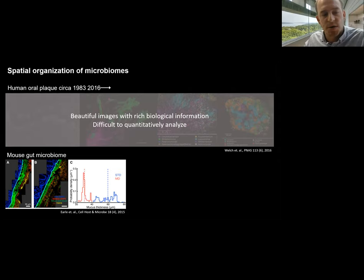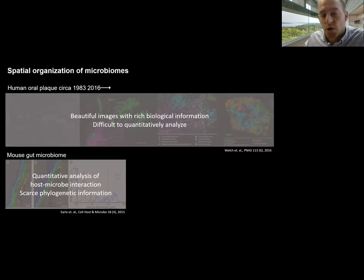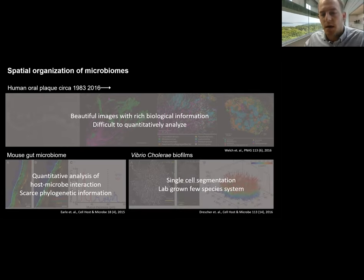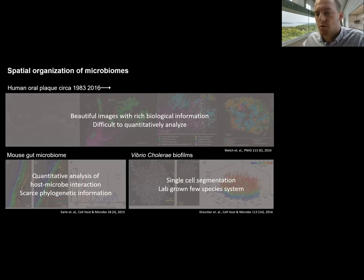There are many studies on the relationships between the host and the microbiome in the mouse gut, but these studies have been limited by scarce phylogenetic information — the number of species resolvable using available techniques was quite limited. Biophysicists have been long interested in the mechanical properties of biofilms and morphologies of bacterial cells within biofilms, and many studies have reported single-cell segmentation with single-cell resolution. However, these studies have mostly been limited to lab-grown systems that contain few species. So we wanted to test the findings of these studies in environmental systems.